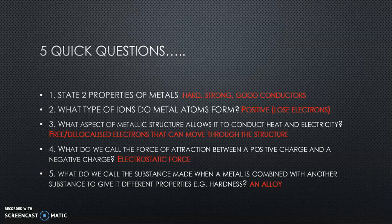That is an electrostatic force, and that is what holds metallic structures together - the attraction between the negative electrons moving through the structure and the positive ions in the structure. Number five: what do we call the substance made when a metal is combined with another substance to give it different properties, for example to make it harder or stronger? We call that an alloy. When you combine another substance with a metal to give it properties for what you want to use it for, we call that an alloy.